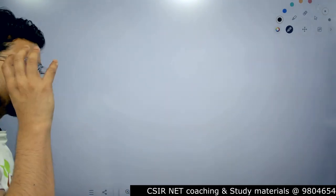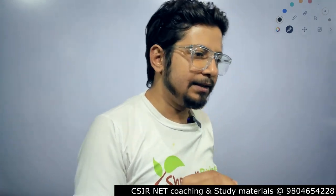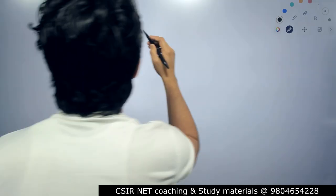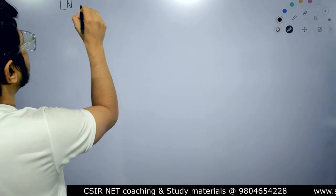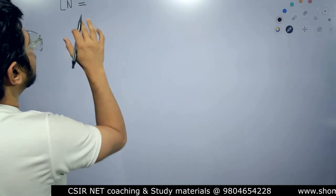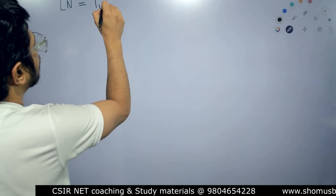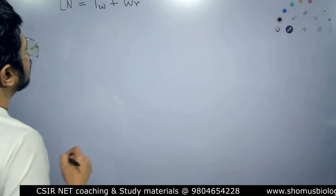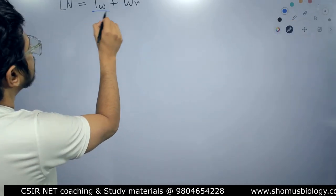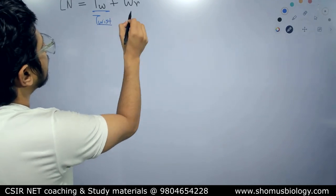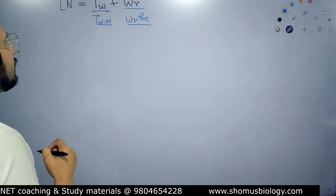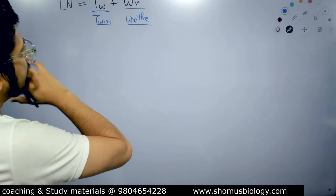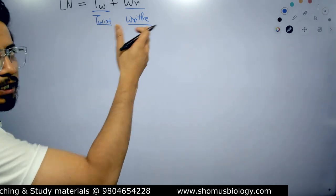The very first thing I want you to understand is the term: the linking number. The linking number has two components. The linking number — LN or LK, whatever you write — equals twist (TW) plus writhe (WR). So the linking number we get is composed of twist and writhe together.